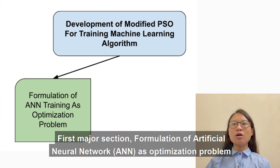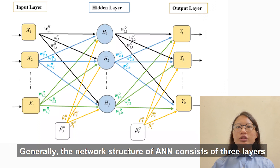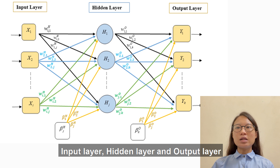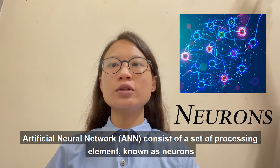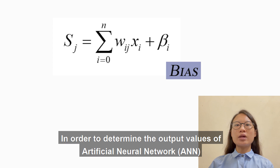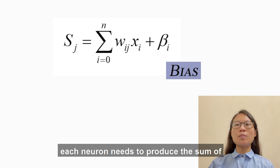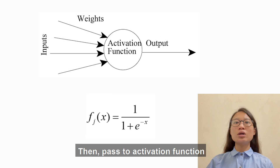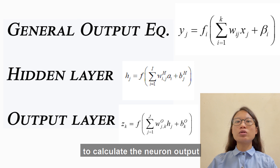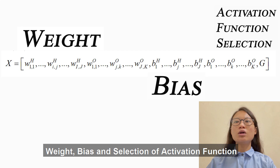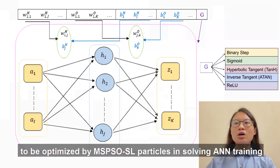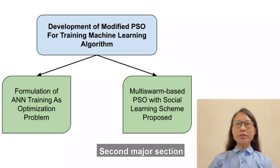My research is divided into two major sessions. The first major session is the formulation of ANN training as an optimization problem. Generally, the network structure of ANN consists of three layers: input layer, hidden layer, and output layer. ANN consists of a set of processing elements known as neurons. To determine the output value of ANN, each neuron produces the sum of weights together with bias value, then passes to an activation function to calculate the neuron output. The encoding strategy employed by this research represents all decision variables with bias and selection of activation function, to be optimized by the MS-PSO-SL particle in solving ANN training.